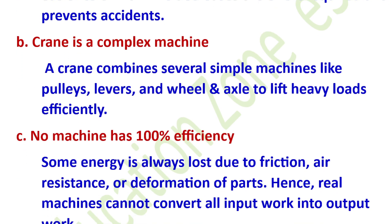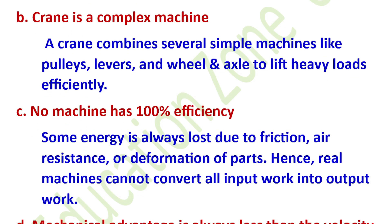Why does no machine have 100% efficiency? Some energy is always lost due to friction, air resistance, or deformation of parts.